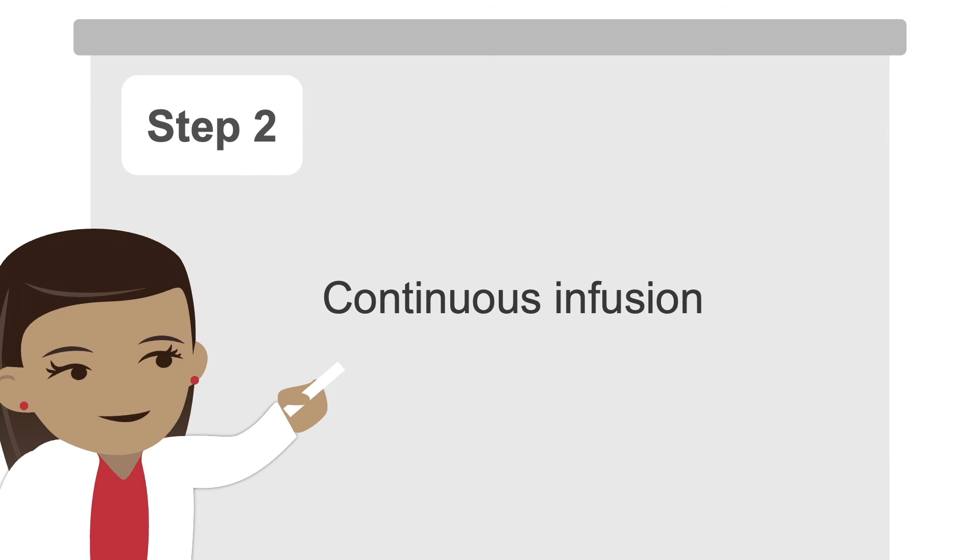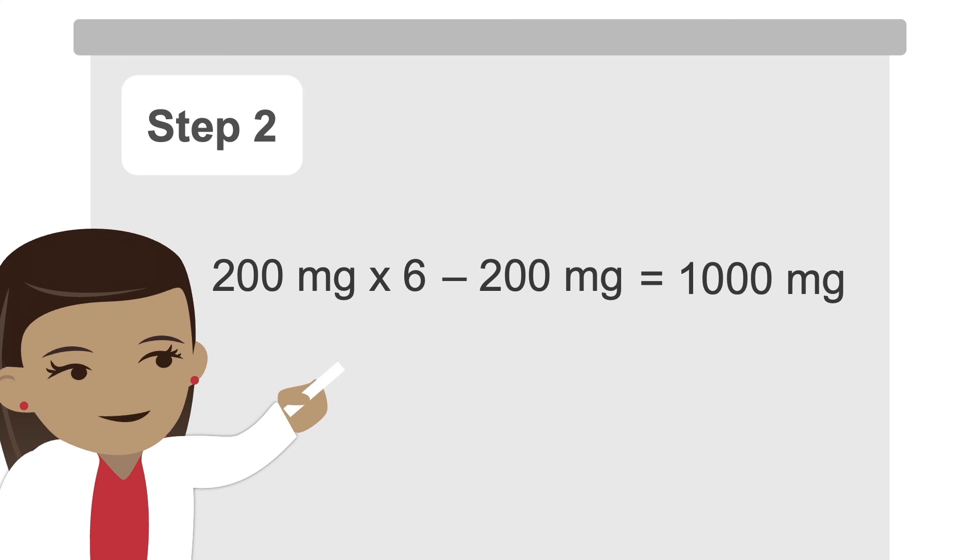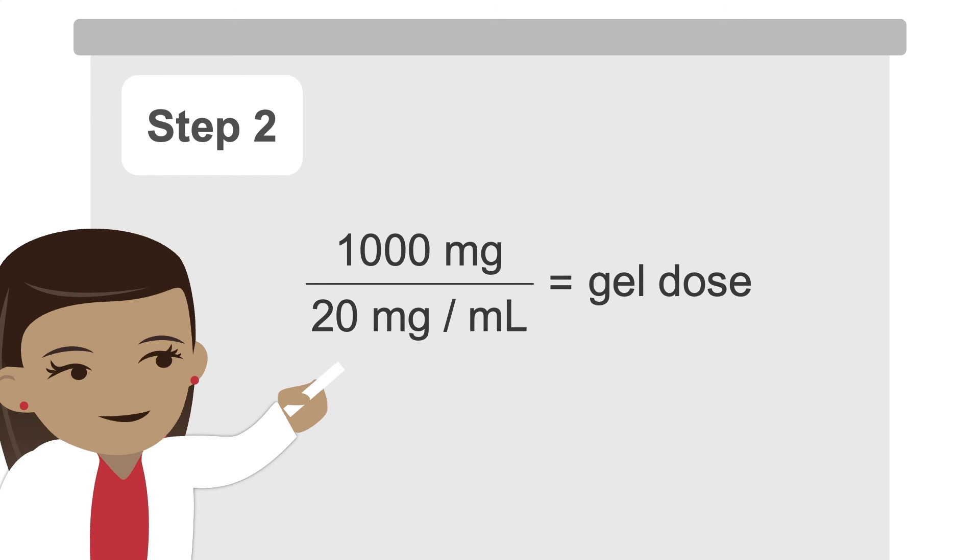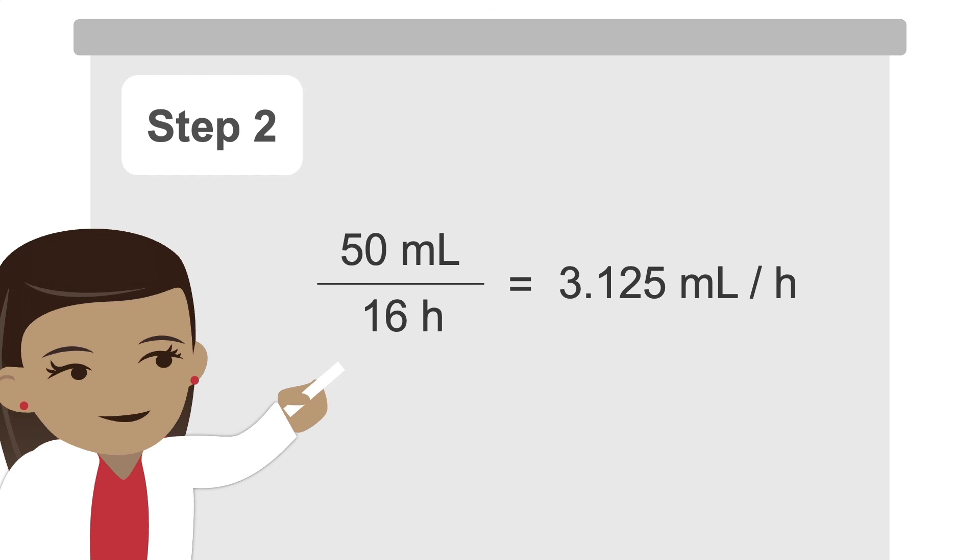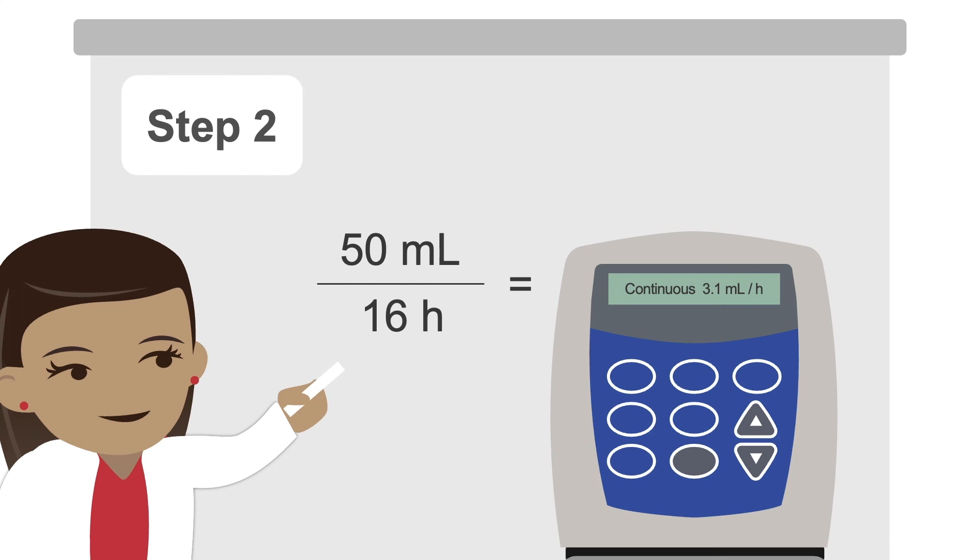Next, you determine the continuous infusion dose as follows. Add all his levodopa together, so 200 mg times 6, and then subtract the morning dose of 200 mg. This equals 1000 mg. Divide the total dose by 20 to convert it to the gel, so 1000 over 20 equals 50 ml. Then divide this total by 16 hours, so 50 divided by 16 equals 3.125 ml per hour. Finally, round to one decimal, so the continuous infusion dose is 3.1 ml per hour.